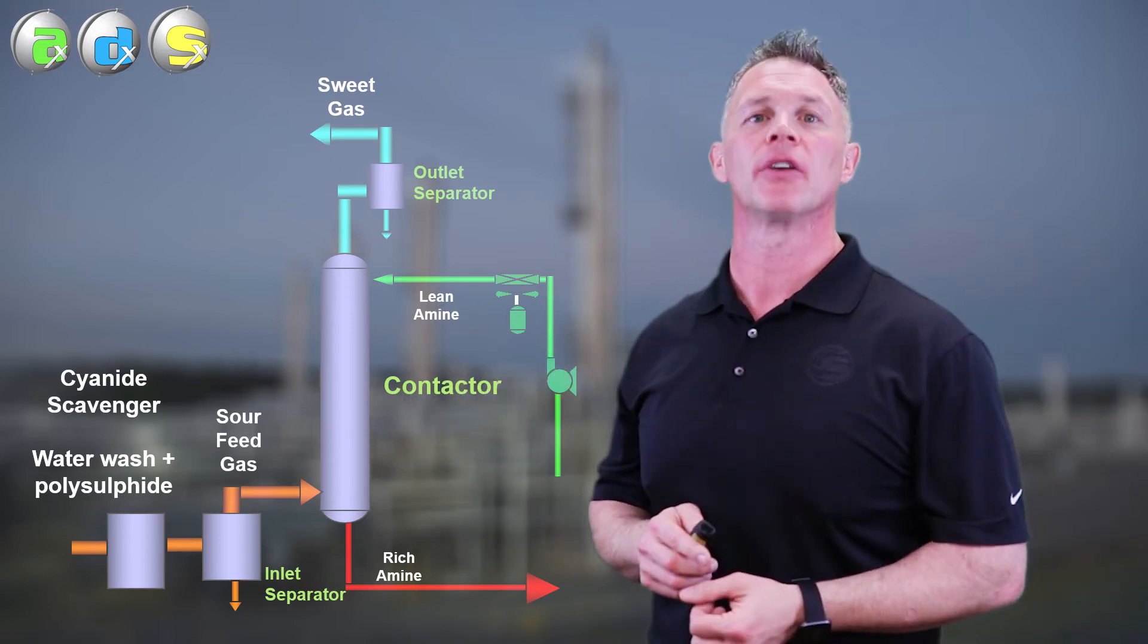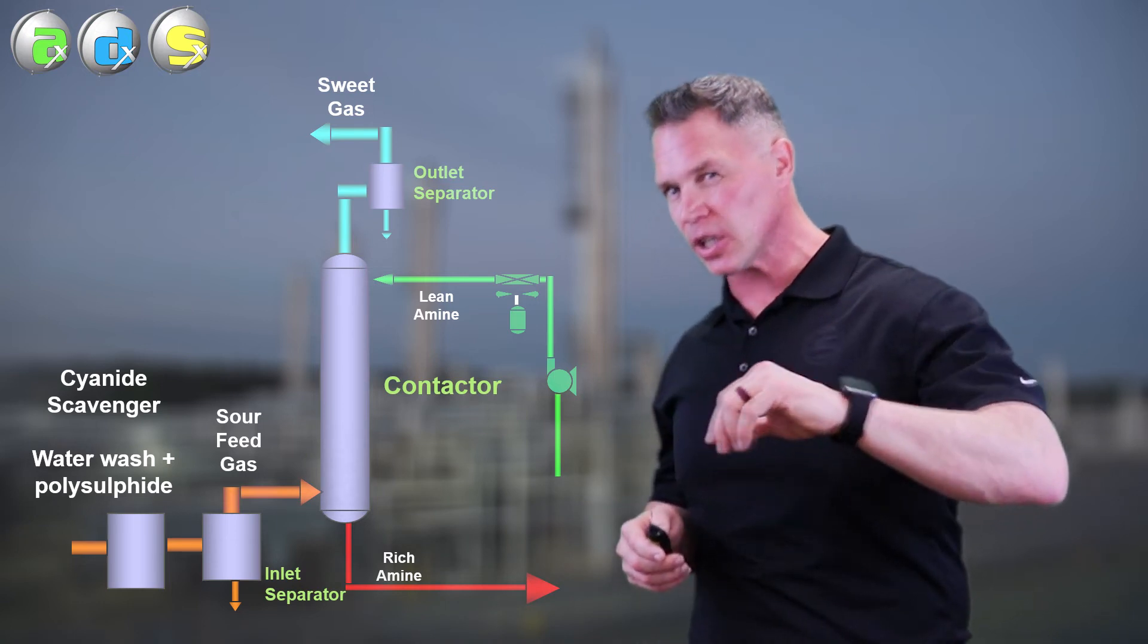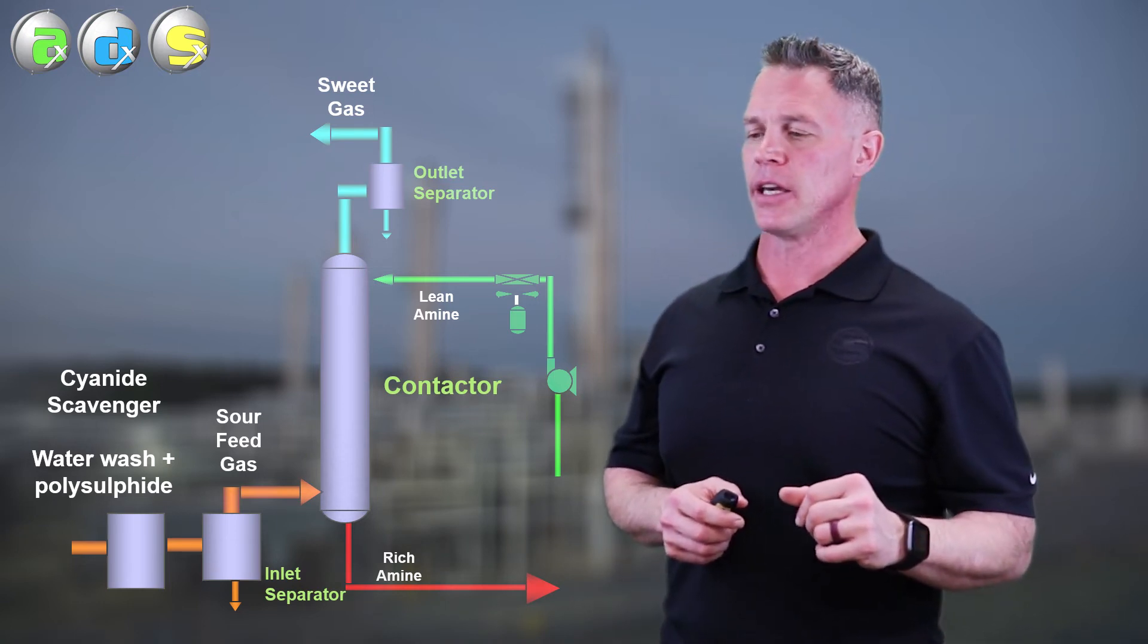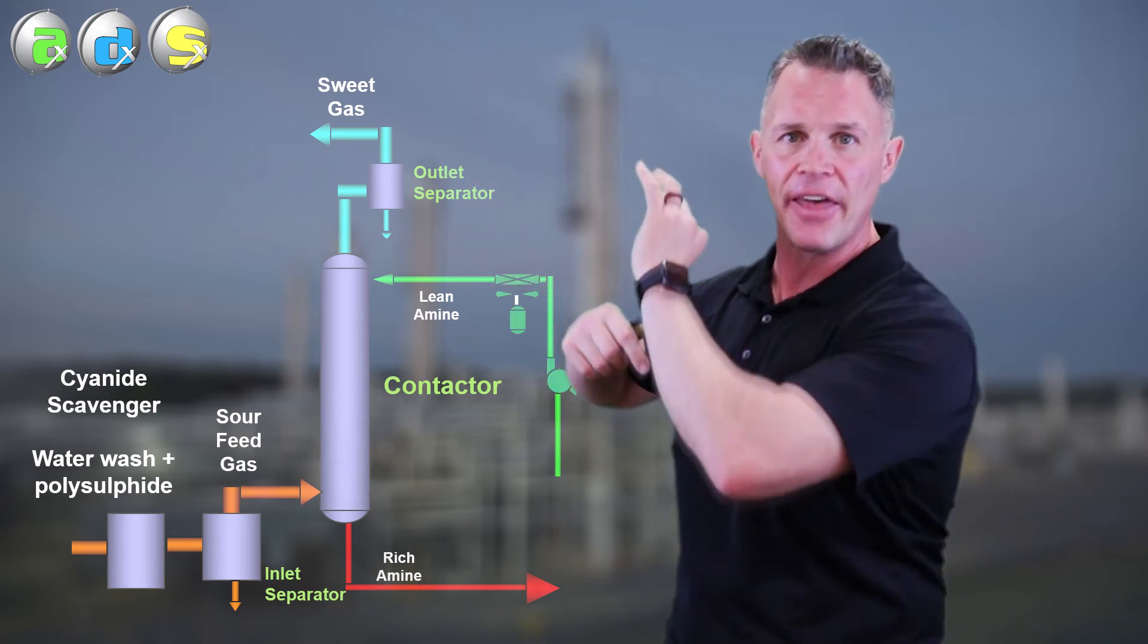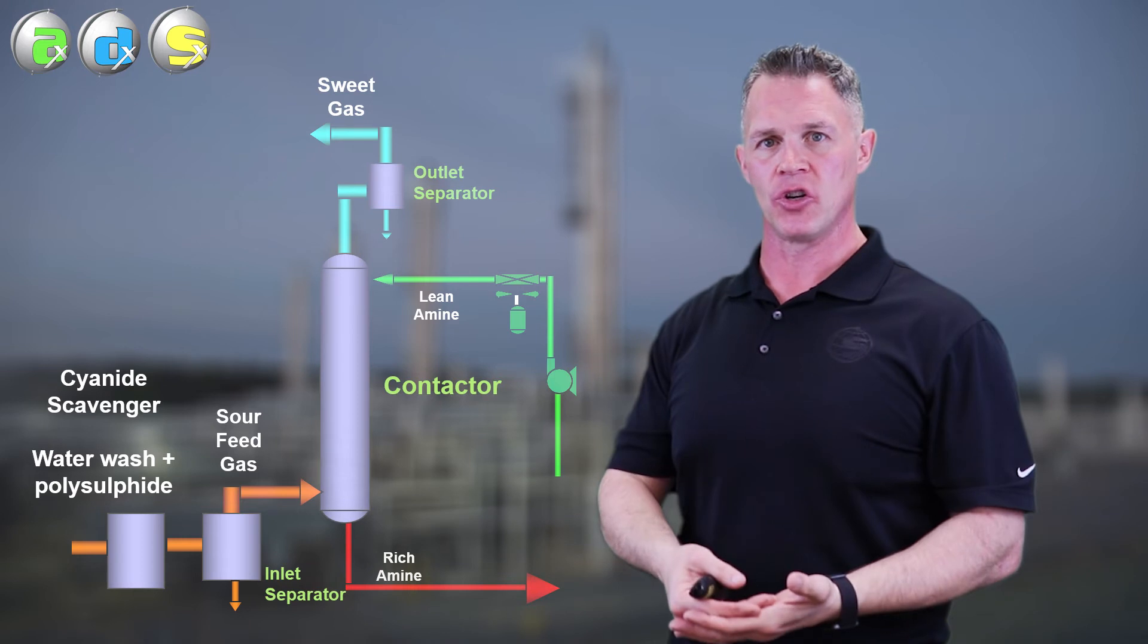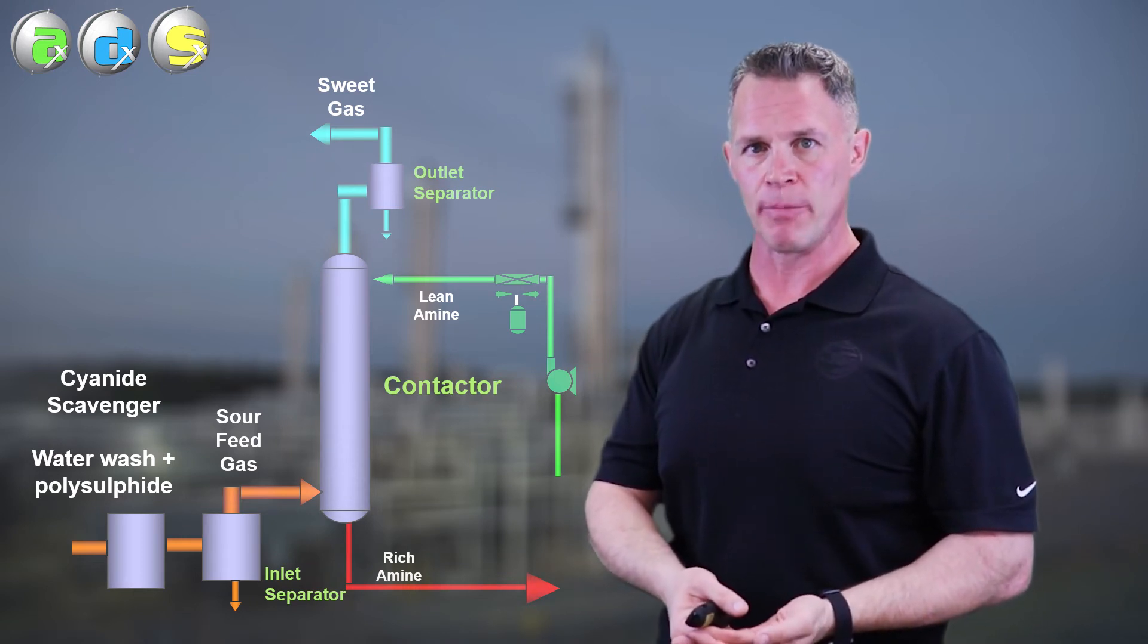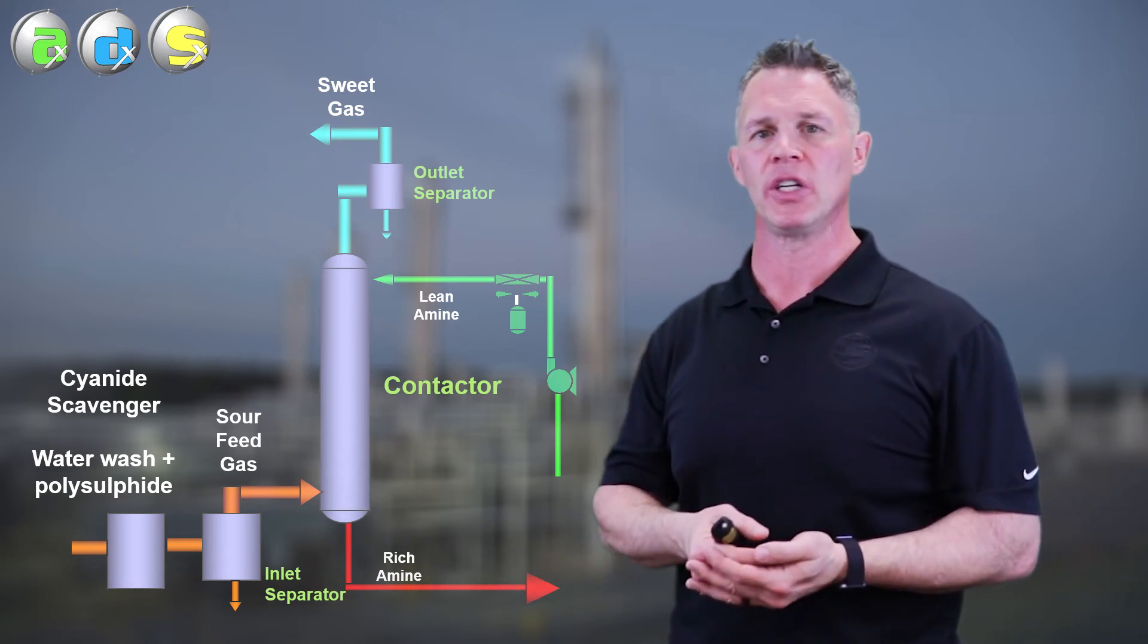Basically the most common one is a water wash. You bubble the gas through a water wash first and the water wash contains a cyanide scavenger, such as a polysulfide, ammonium polysulfide, the most common one we've seen in the field.